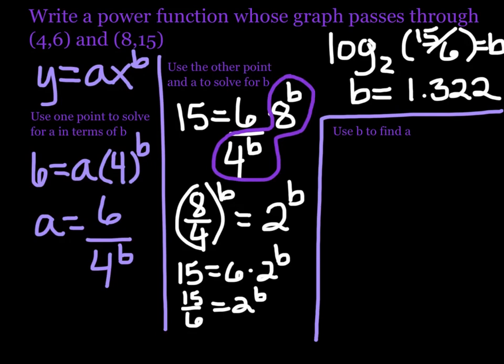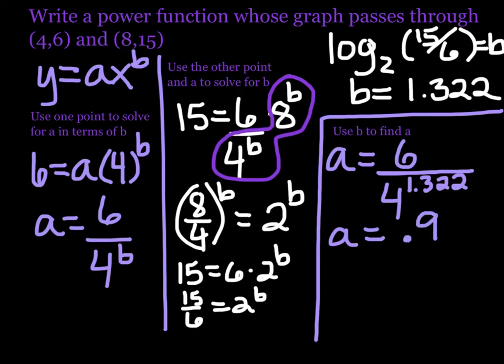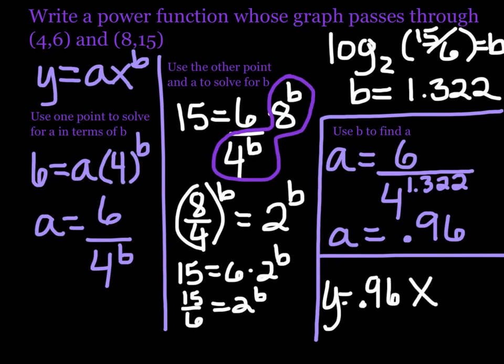This is the kind of problem you're going to have to use your calculator for. Punch it in and you will get a b value of 1.322. Now like before, we're going to use that b to find a. So we know that a was 6 over 4^b. So we've got 6 divided by 4 to the 1.322. Use the second answer or the store function in your calculator so that you don't lose any accuracy. And you should get an a value of exactly 0.96. And now that we know a and b, we can write the final equation where a is 0.96 and then we have x raised to the 1.322 power.